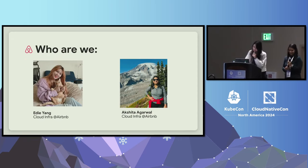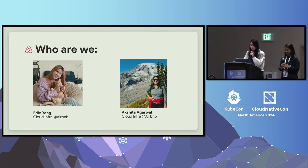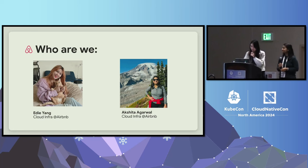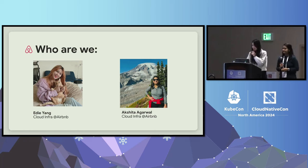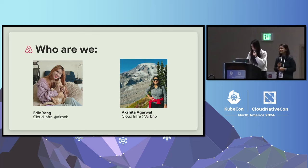Just a bit of introduction about ourselves. My name is Edie. I'm a software engineer working at Airbnb on the Cloud Infrastructure team. I am a cat person — I love cats and have three lovely cats. My hobbies in leisure time include basketball, dancing, and singing. I actually try a lot of different things.